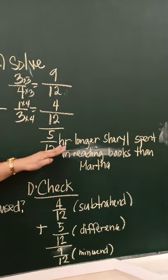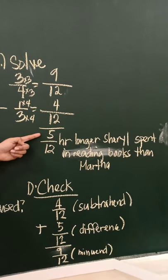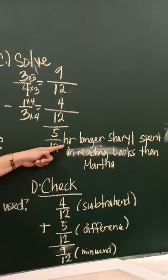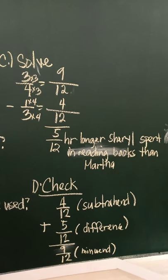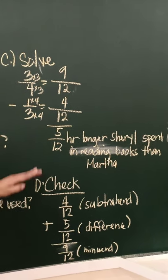So, this is now the final answer with the label. Five-twelfths hour, this is the unit. Longer Cheryl spent in reading books than Martha.